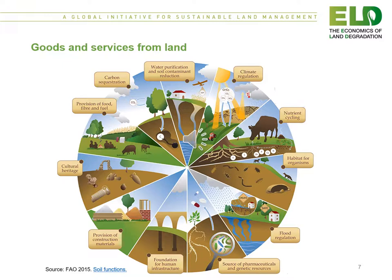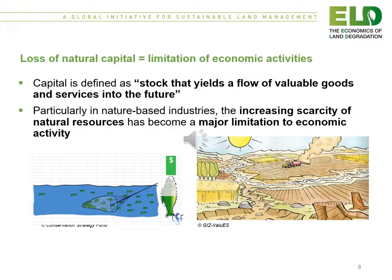This figure is useful for this module and indeed other modules because it shows the goods and services that we obtain from land. When we lose natural capital, we impose a limitation on economic activities. Capital here is defined as a stock that yields a flow of valuable goods and services into the future.